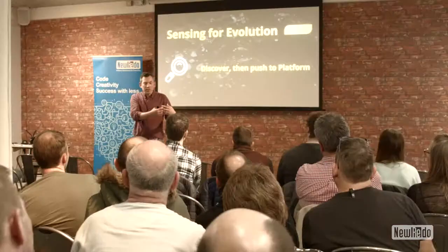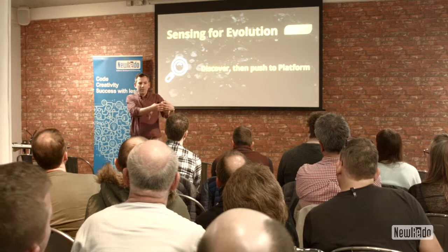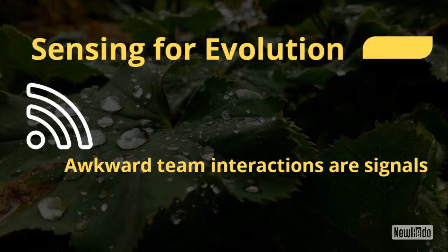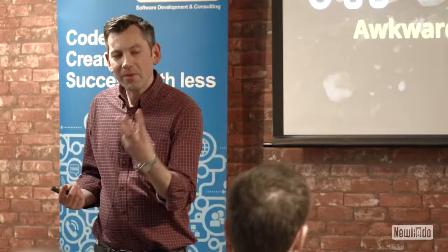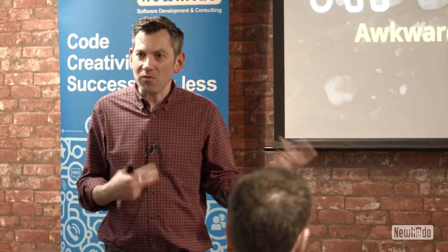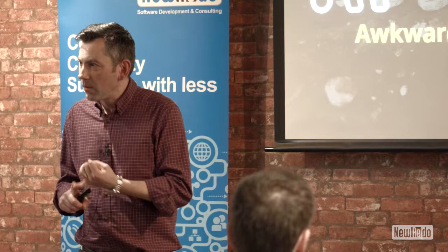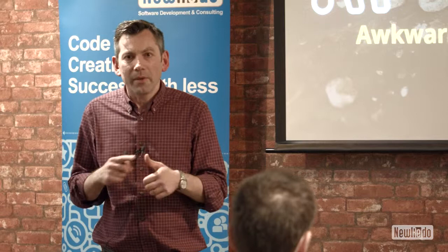We shouldn't be continually collaborating to get a new Hadoop cluster to work — if we find we're having to do that, something's wrong. But if teams are interacting using these three interaction modes and there's awkwardness, that's a useful signal. Because we've only got three different ways teams can interact, it's easy to detect when something's going wrong. We can use that as a signal to ask: have we got the right skills? Are we missing a capability? Are we building the wrong thing? Are we going too quickly or too slowly?